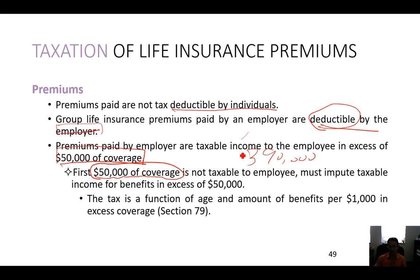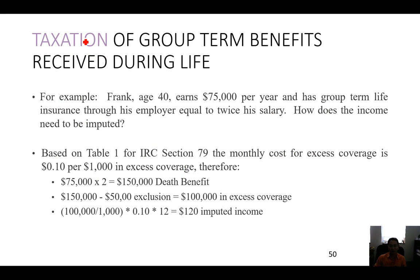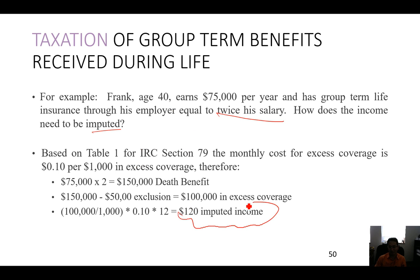I have $390,000 from Winthrop, so I have to pay additional. For taxation of group term benefits received during life — for example, Frank, age 40, earns a certain salary and has group term insurance equal to twice his salary. Table 1 shows the monthly cost and how much income needs to be imputed — I'm not going to test you on that calculation.